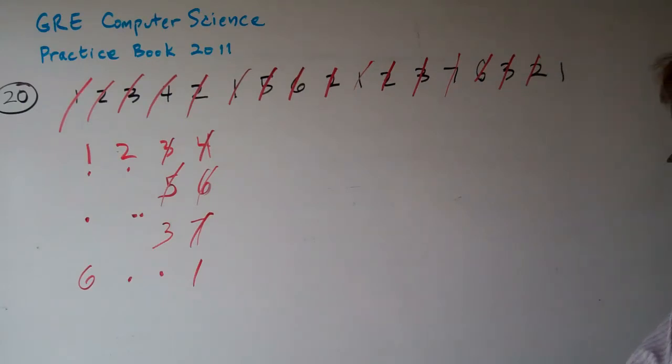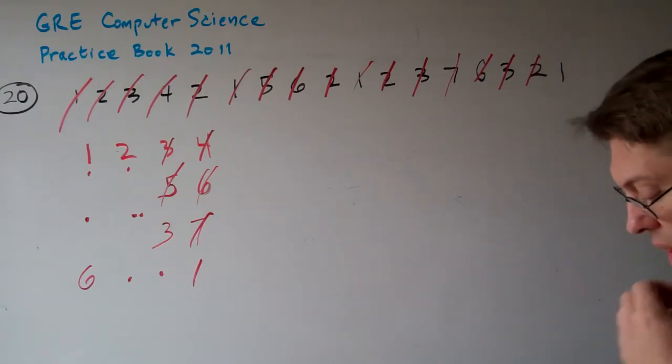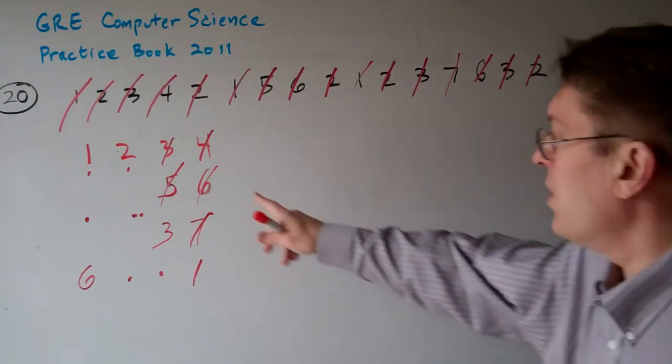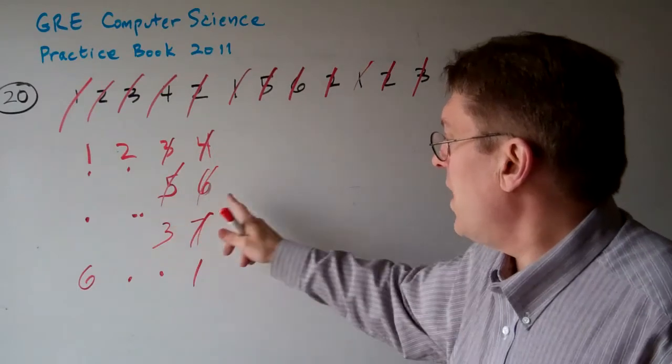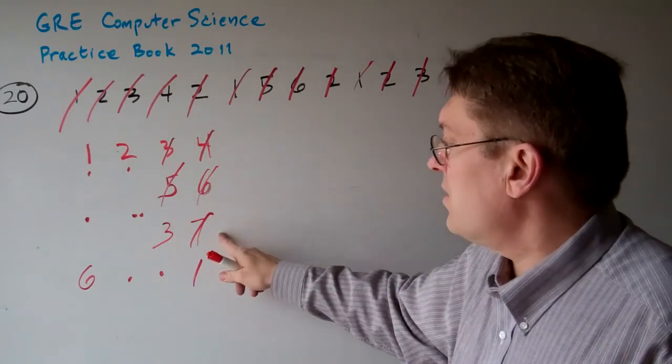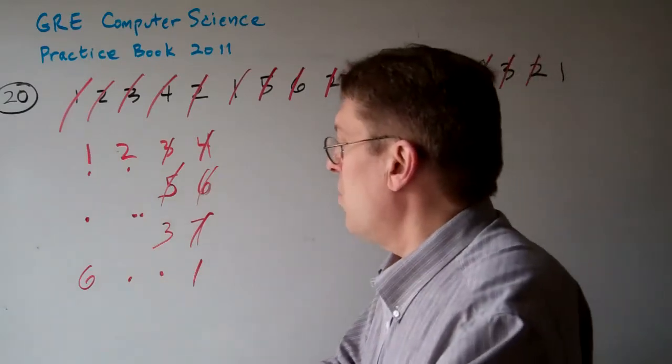So now the question is, how many page faults were there? We basically had, we got rid of the three, got rid of the four, got rid of the five, got rid of the six, and got rid of the seven. And then here we got rid of the one.